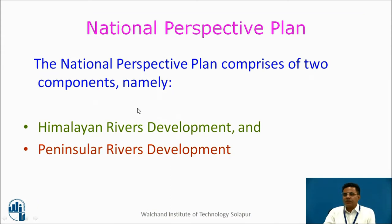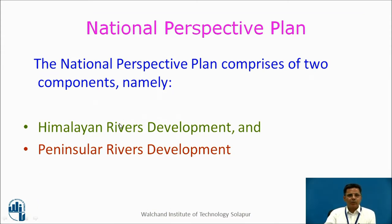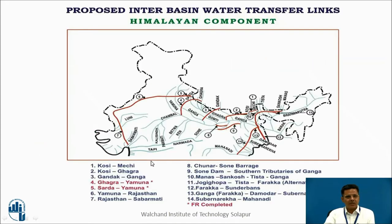This National Perspective Plan has two components: one is the Himalayan River Development Component and the other is the Peninsular River Development Component.